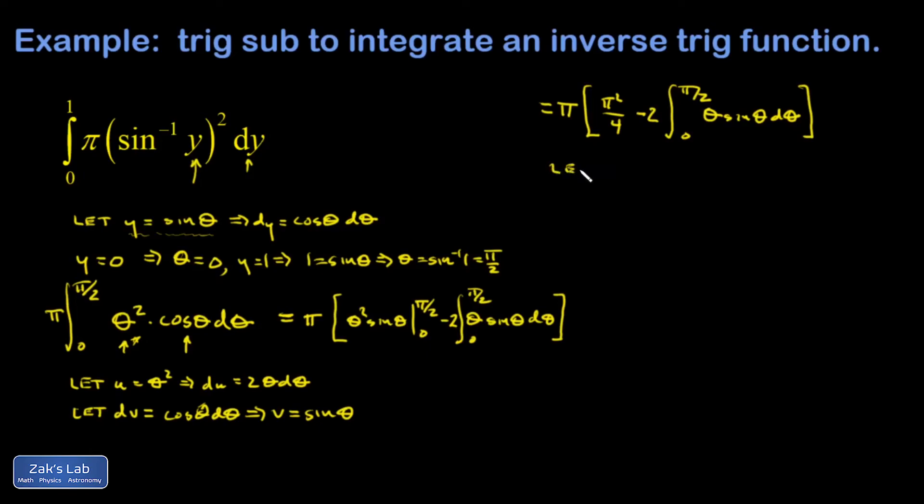Then I have minus two times this integral, which requires more integration by parts. Let u be theta, so du is d theta. Let dv be sine theta d theta, and v is negative cosine theta.